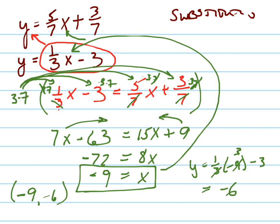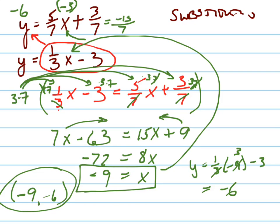So here's our solution: negative 9, negative 6. Let's make sure that's right by plugging in negative 9 and negative 6 and checking it in the other equation. Wait — I see what I did wrong here. I plugged in negative 3. I should have plugged in negative 9, because that's what x is. So let's do that again.